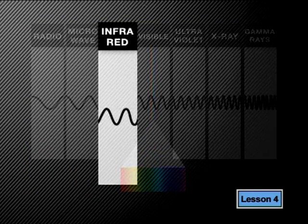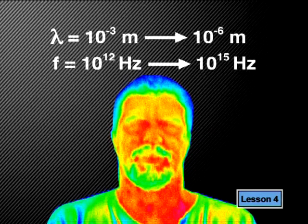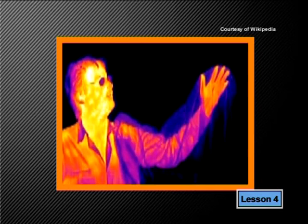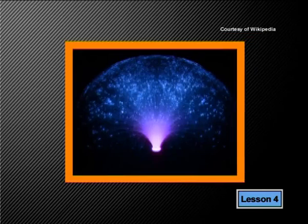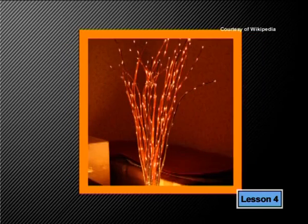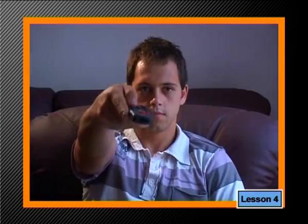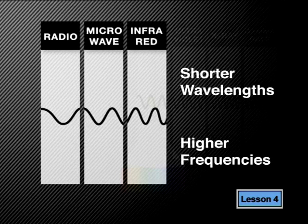Next, we have infrared waves. Infrared waves have wavelengths between 10 to the minus 3 meters and 10 to the minus 6 meters, with frequencies between 10 to the 12 Hz and 10 to the 15 Hz. They are produced by any hot bodies such as humans, fires, and the sun. We use infrared radiation to cook food in conventional ovens. Infrared waves are also used in optical fibers for communication, and your TV remote control uses these waves. Chemists and forensic scientists use infrared spectrometry to identify characteristics of many molecules. Notice that as wavelengths get shorter, frequencies get higher.